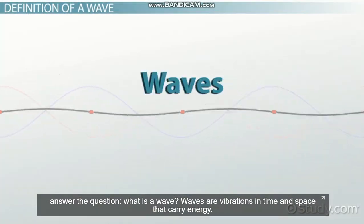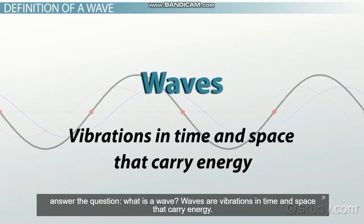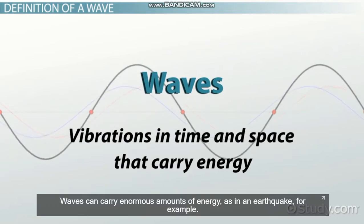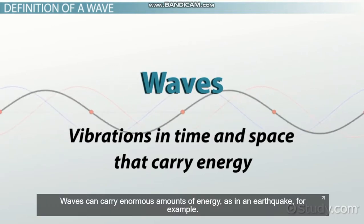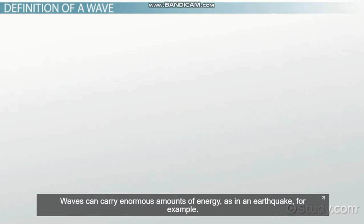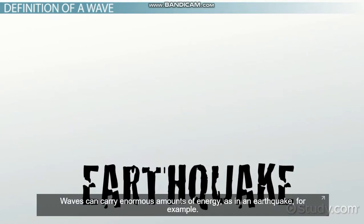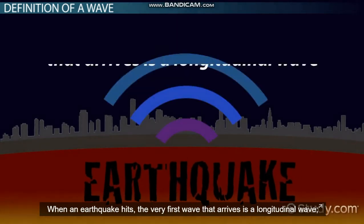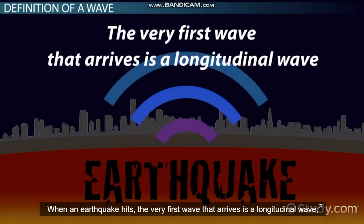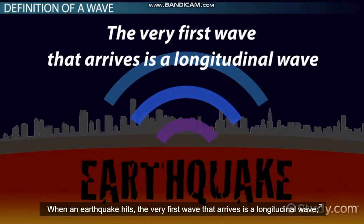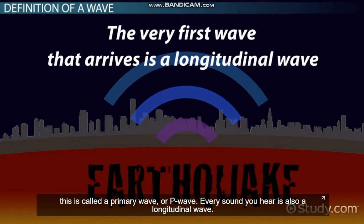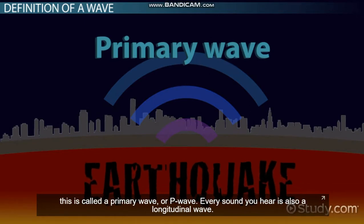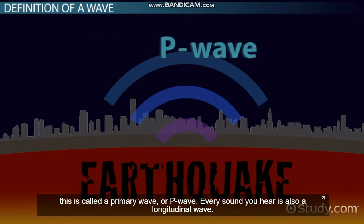Waves are vibrations in time and space that carry energy. Waves can carry enormous amounts of energy, as in an earthquake, for example. When an earthquake hits, the very first wave that arrives is a longitudinal wave. This is called a primary wave, or P wave.